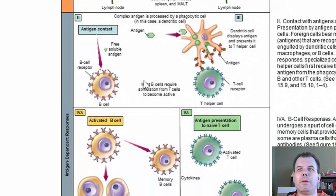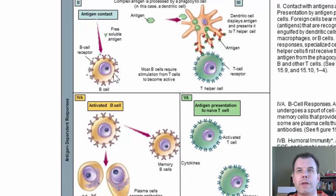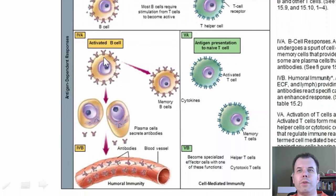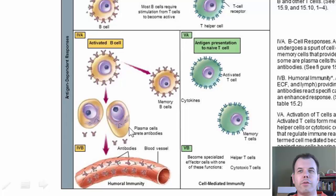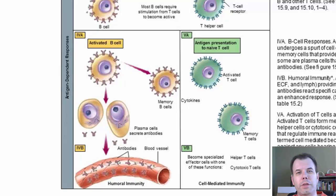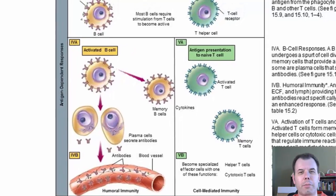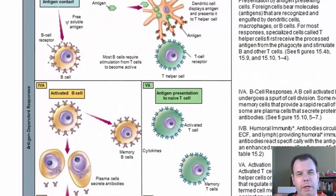Once an antigen — a piece of bacteria or virus — comes in contact with a B cell or T cell with matching specificity, it becomes activated. The activated B cell does two things: it makes memory cells that remember that antigen long-term for many years, and it becomes plasma cells — little factories that produce lots and lots of antibodies released into the bloodstream to find and bind antigens. That's how B cells respond: bind antigen, make memory cells and plasma cells, produce more antibody.